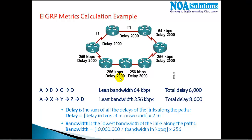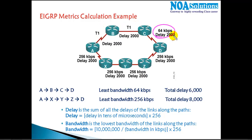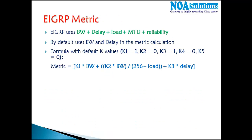So for bandwidth, EIGRP takes the least bandwidth on the path; for delay, it adds all delays together. This is useful theoretically for exams and interviews, but practically the router calculates everything automatically. What matters for us is the cost: whichever route has the least cost is considered the best route.